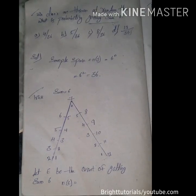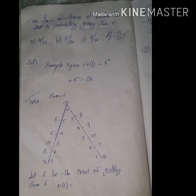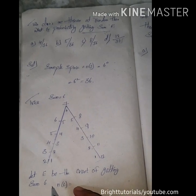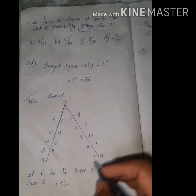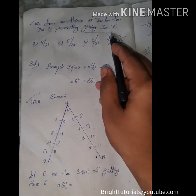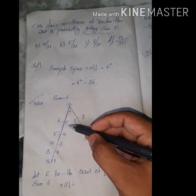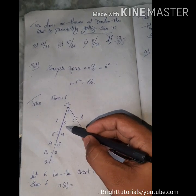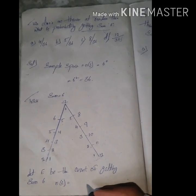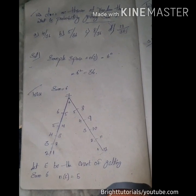The question asks for the probability of getting a sum of six. Let E be the event of getting a sum equal to six. Using the triangle trick, we locate six on the triangle and its respective inside number is five. So n(E) = 5.